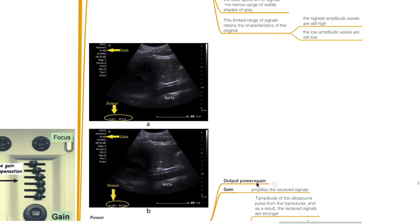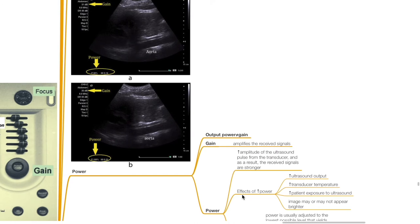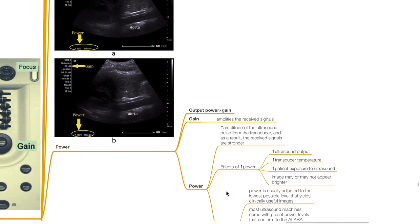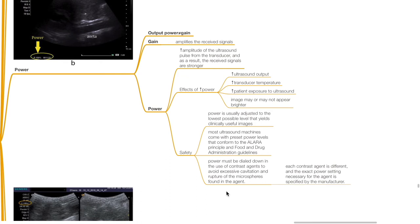Power: output power does not equal gain. Gain amplifies the received signals; power increases the amplitude of the ultrasound pulse from the transducer, so received signals are stronger. Effects of increasing power include increased ultrasound output, increased transducer temperature, and increased patient exposure to ultrasound. Power is usually adjusted to the lowest possible level that yields clinically useful images. Most ultrasound machines come with preset power levels conforming to the ALARA principle and FDA guidelines. Power must be dialled down when using contrast agents to avoid excessive cavitation and rupture of the microspheres. Each contrast agent is different and the exact power setting is specified by the manufacturer.